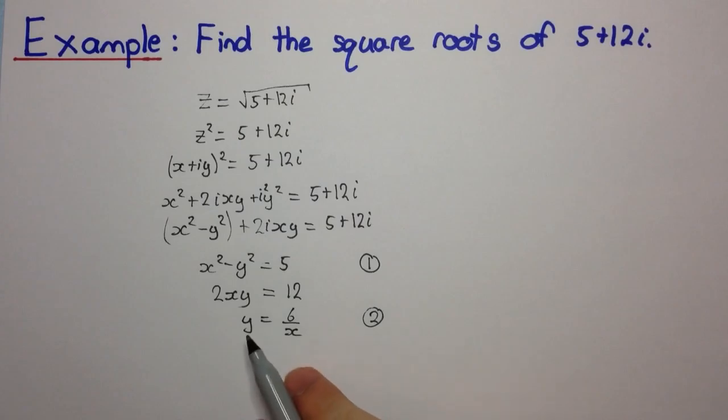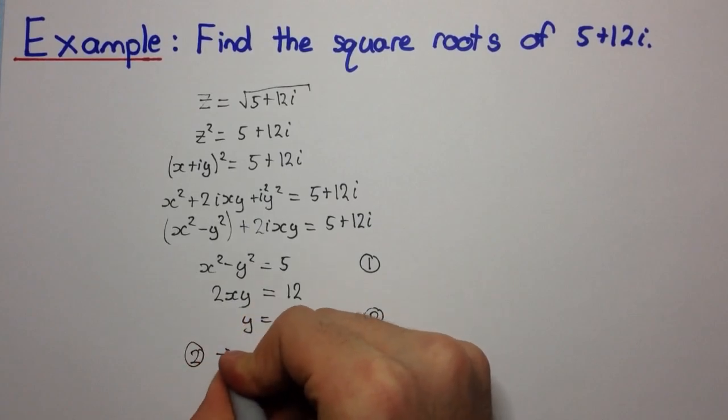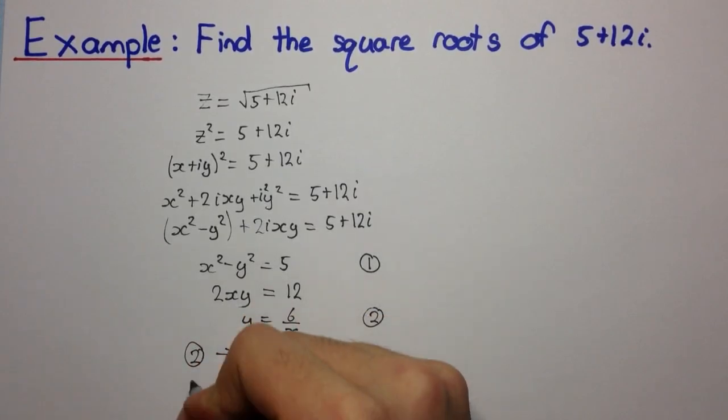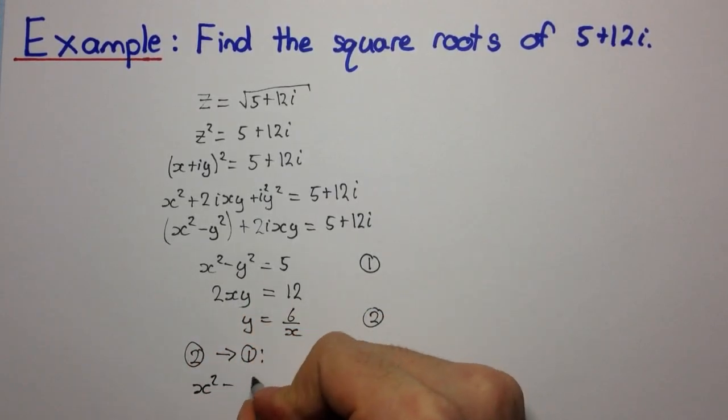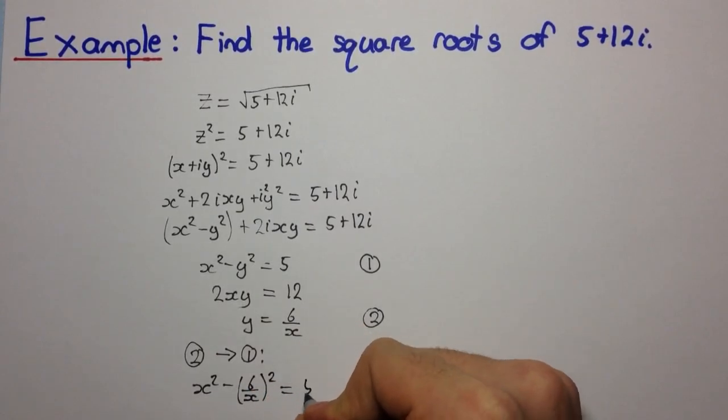So now we're just trying to solve these two equations simultaneously. So let's substitute 2 into 1 and see what we get. We get x squared minus 6 over x squared equals 5. So this is x squared minus 36 over x squared is equal to 5.